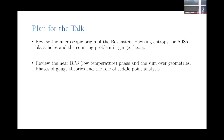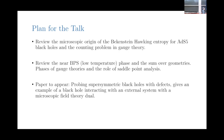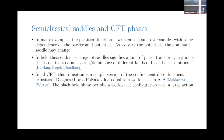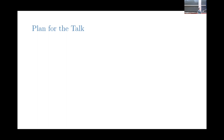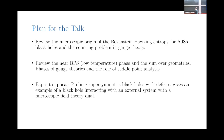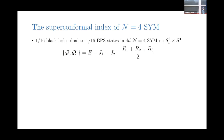We'll review the microscopic origin — the Bekenstein-Hawking entropy for AdS5 and the counting problem. We'll review my work on the near-BPS phase from the bulk point of view, the sum over geometries, and the role of this saddle point analysis. And then finally I'll discuss a paper to appear, where we'll probe supersymmetric black holes with defects. We'll consider observables that can both detect this black hole phase transition, consider some generalization of this kind of observable which serves as a probe of a black hole, and find a microscopic field theory tool for it.